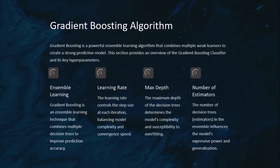When it comes to the algorithm — the gradient boosting algorithm — this is a powerful ensemble learning algorithm that combines multiple weak learners to create a strong predictive model. This section provides an overview of the gradient boosting classifier and its key hyperparameters: the learning rate controls the step size at each iteration, maximum depth of the decision trees determines the model's complexity and susceptibility to overfitting, and the number of estimators is the number of decision trees.